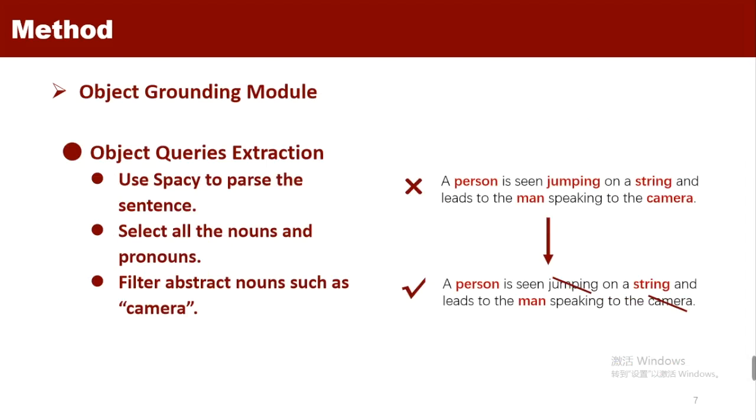For the object grounding module, we need to first identify the object words in the description, and then ground object queries in given video frames. For object queries extraction, we find that directly selecting words corresponding to object vocabulary will introduce some non-object words by mistake.